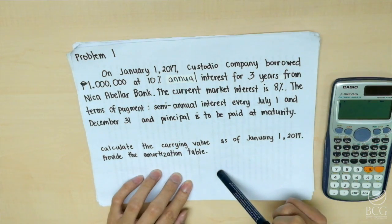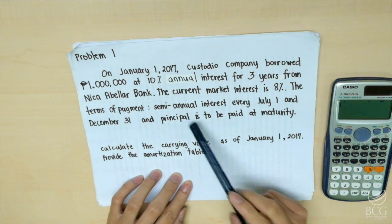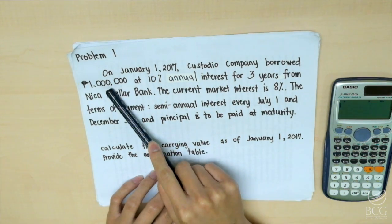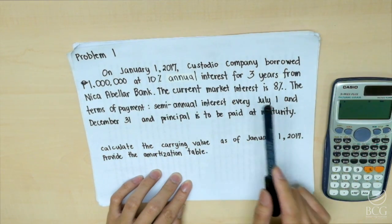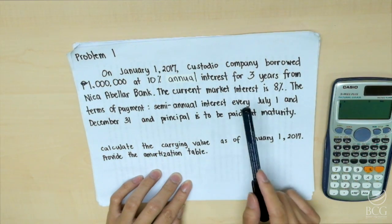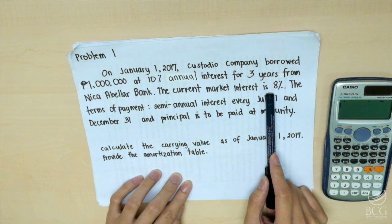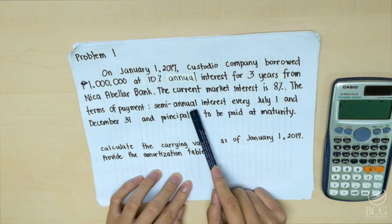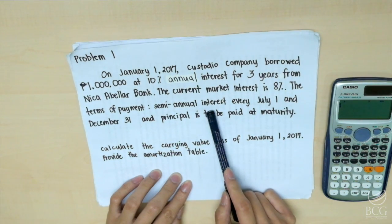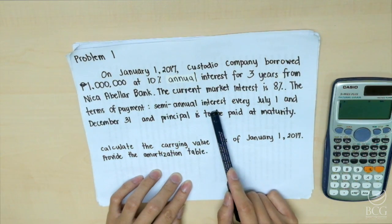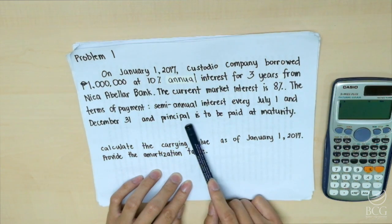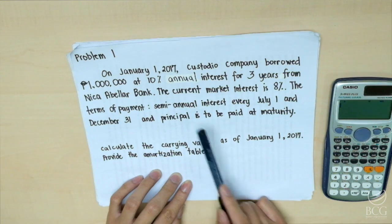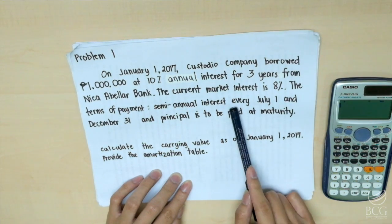In this problem, we are given the principal of 1 million, the nominal rate of 10%, the effective rate of 8%, and the terms of payment. In this problem, we are going to pay interest twice in a year, and the principal is at the maturity of the instrument.